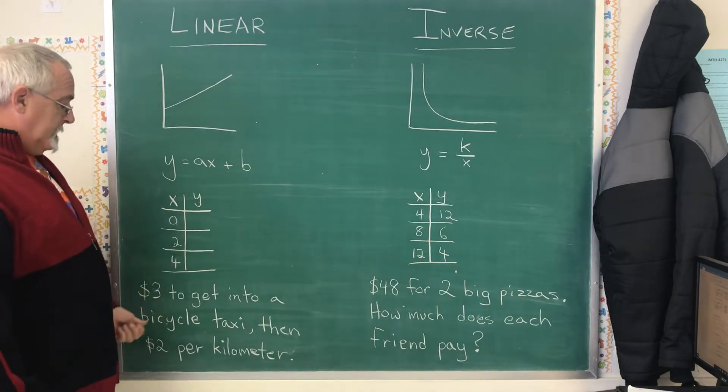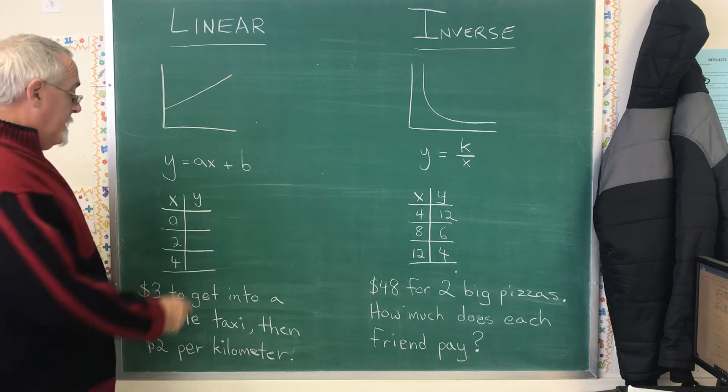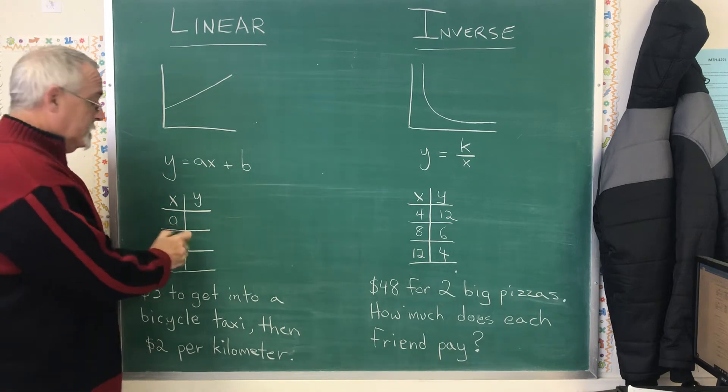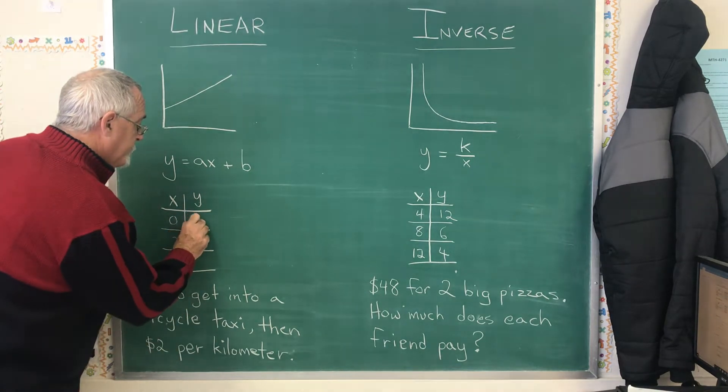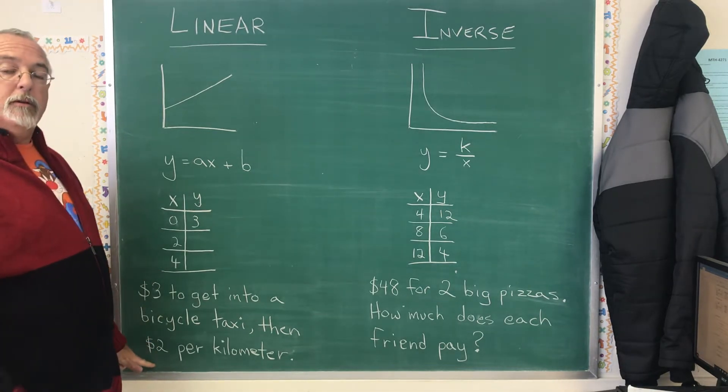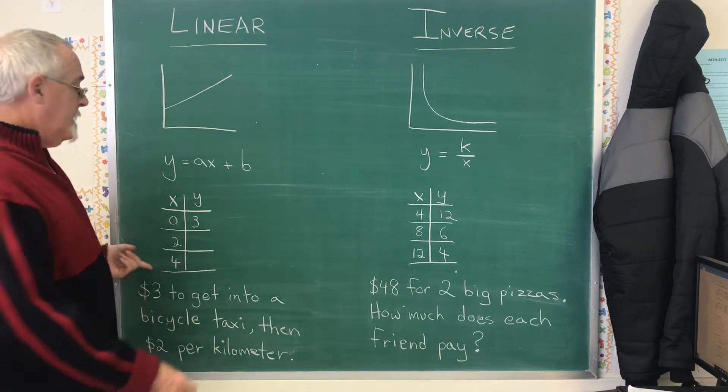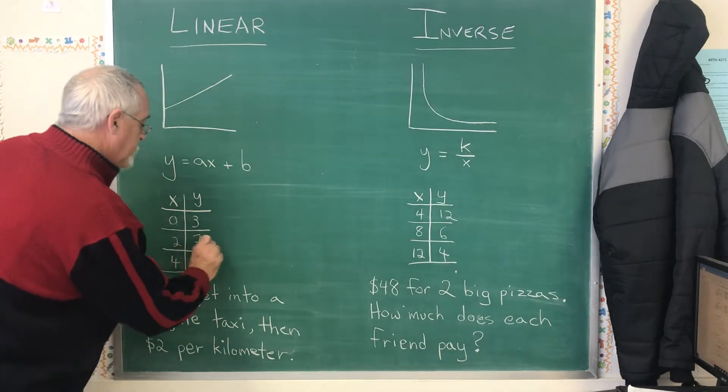If I get into the bicycle taxi and I'm charged $3 before we go anywhere, that means if I go 0 kilometers, it costs me $3. If I go 2 kilometers, 2 times $2 per kilometer is $4, but I also have to pay the $3 for just getting in. 4 plus 3 is 7, I have that point.